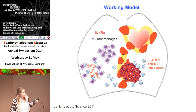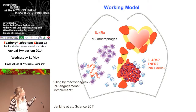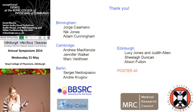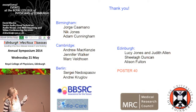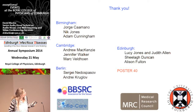Macrophages also proliferate in the peritoneal cavity in an IL-4 receptor alpha-dependent manner. We would like to know whether the production of IgM is important to mediate worm killing by macrophages, perhaps through Fc receptor engagement or complement. I would like to thank my former lab in Birmingham, collaborators in Cambridge — Andrew McKenzie — in Berlin — Sergey Nedospasov — and Lucy Jones and Judy Allen in Dayton; we are very excited about this story. Lucy has a poster, number 40, if you have any more questions.